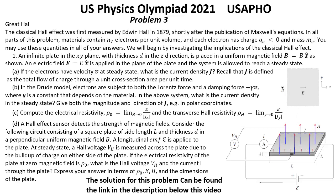Question A: If the electrons have velocity V at steady state, what is the current density J? Recall that J is defined as the total flow of charge through a unit cross-section area per unit time.